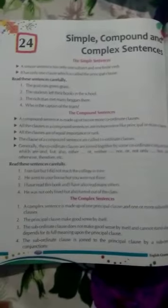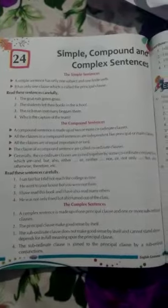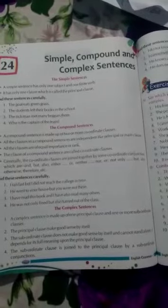A compound sentence is made up of two or more co-ordinate clauses. All the clauses in a compound sentence are independent like principal or main clauses. All the clauses are of equal importance or rank. The clauses of a compound sentence are called co-ordinate clauses. Generally,